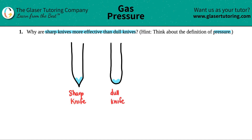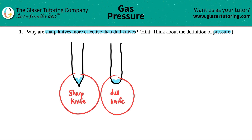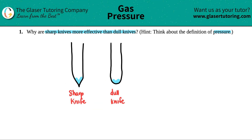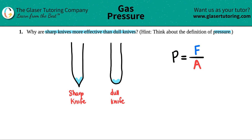Now we have to talk about this in terms of pressure. There are many different formulas for pressure, but the one that comes to mind here — especially when we're talking about why one thing is more effective than another — is this pressure formula: pressure, which is P, equals force F divided by area A.